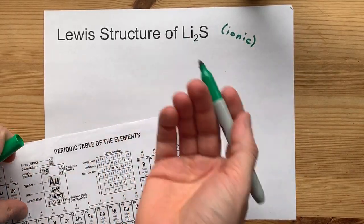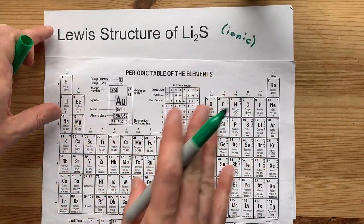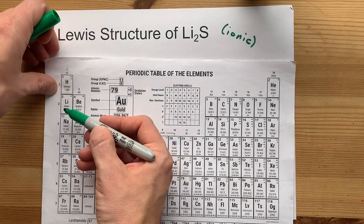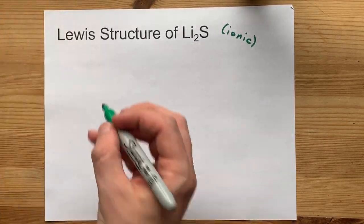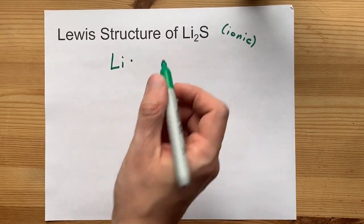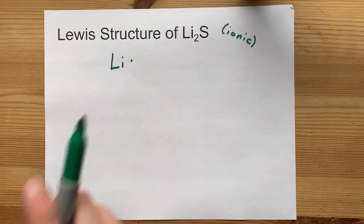The metals are going to give up electrons to the non-metal. That's how it always works. So lithium in group 1 means it brings one valence electron with it. There's the one dot.